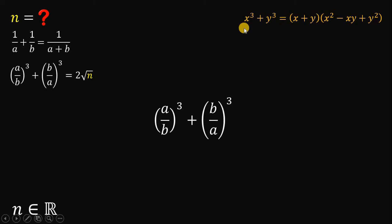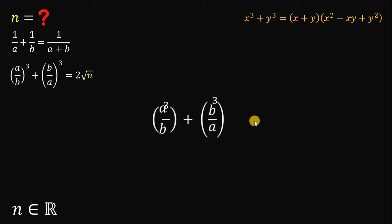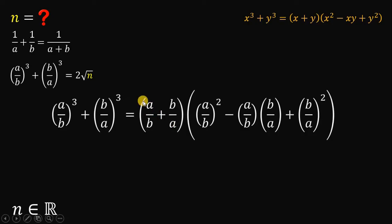Take note that if we have x cubed plus y cubed, it is equivalent to (x plus y) times (x squared minus xy plus y squared). On the given expression, let x be equal to a over b and y be equal to b over a. Therefore, this expression can be factored as: (a over b plus b over a) times (a over b squared minus a over b times b over a plus b over a quantity squared).